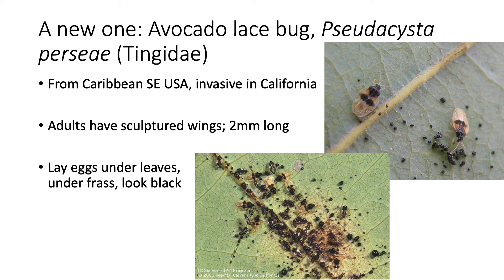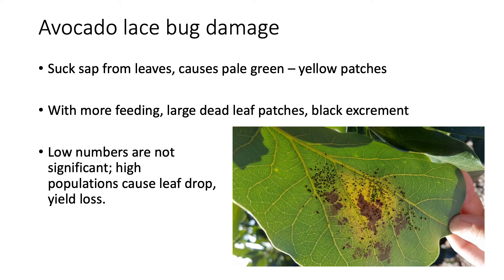Throughout their life they'll feed on the leaf. The damage they cause comes from sucking sap out of the leaves. If you have low populations, it'll just cause little pale green patches on the leaves. If it gets a little worse, you'll have yellow patches. But if the population builds up and feeding becomes more severe, you'll end up with large dead patches on the leaves with little dots of black excrement all over. This can get really out of hand — you can eventually have leaf drop and yield loss on your trees if enough leaves are damaged.